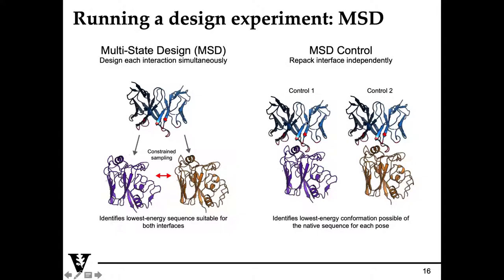For our control experiment, we'll be designing these interface residues as independent complexes. The rationale behind this is that this would be like trying to find a broadly neutralizing antibody. Can you actually identify an antibody sequence that can bind to multiple antigenic targets?